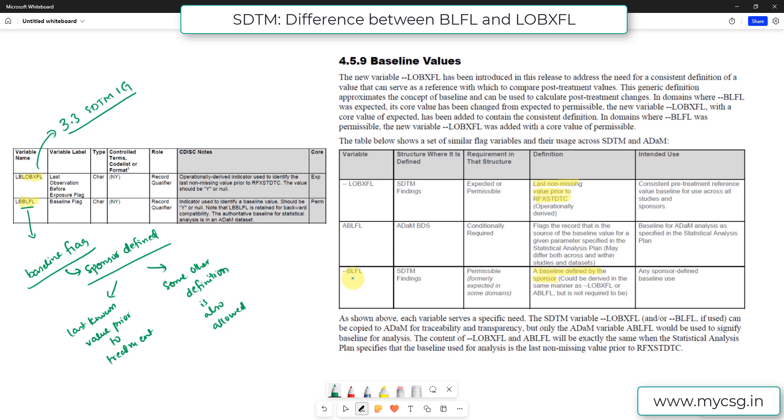But as per the definition of BLFL, sponsors could choose some other definition for baseline and populate your BLFL as an example. So here they wanted to restrict the definition of baseline in terms of the last known value prior to RFXSTDTC. So we have this newly created variable which is LOBXFL. BLFL definition could still be the same as your LOBXFL, but as per the definition, sponsors could choose some other definition to populate BLFL.